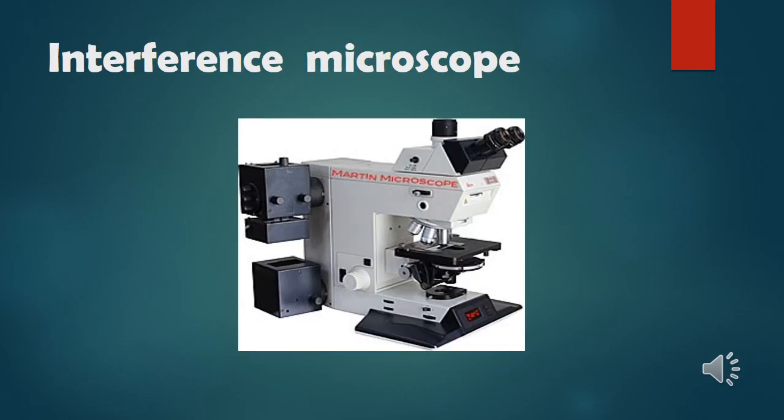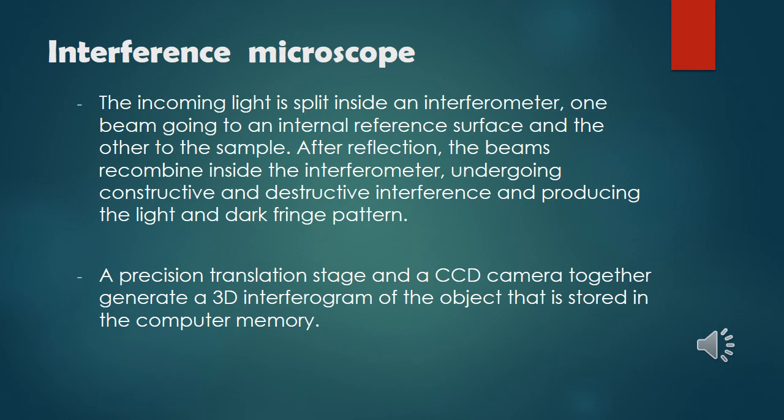Lastly, we have the Interference Microscope. The main function of the Interference Microscope is that the incoming light is split inside an interferometer — one beam going to an internal reference surface and the other to the sample. After reflection, the beams recombine inside the interferometer, undergoing constructive and destructive interference and producing a light and dark fringe pattern. A precision translation stage and a CCD camera together generate a 3D interferogram of the object that is stored in the computer memory.